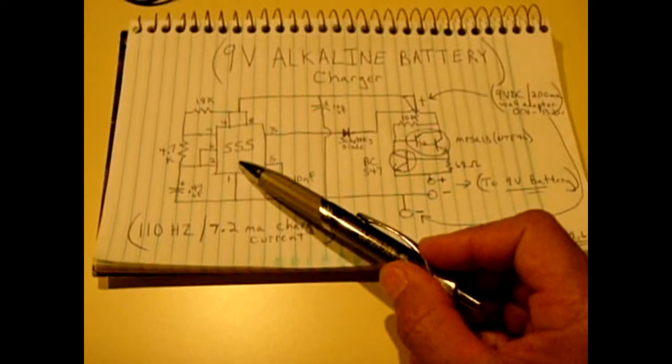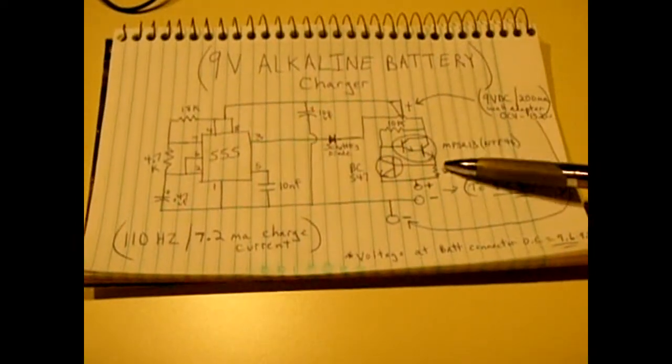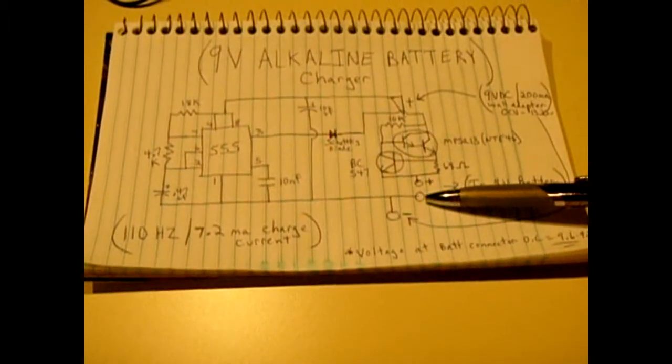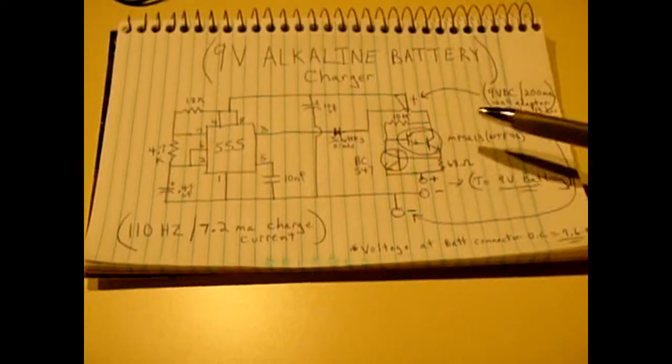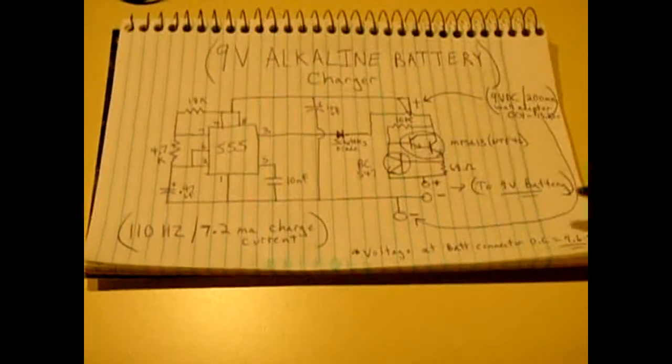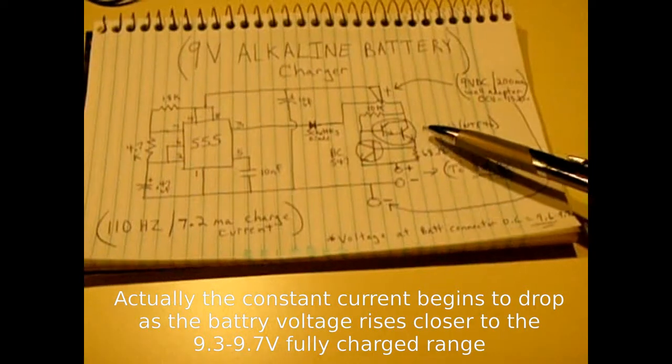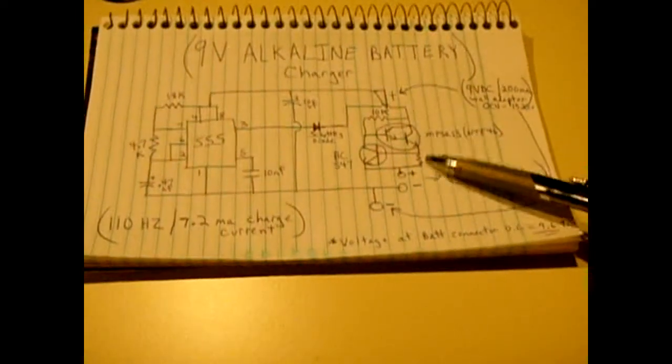So every time the 555 sends a pulse the constant current circuit will pulse into the battery between seven and eight milliamps and that current will stay very steady until it reaches the voltage where the battery is almost charged around 9.6 and 9.7. At that point the constant current will no longer be around seven or eight, it'll start to drop.